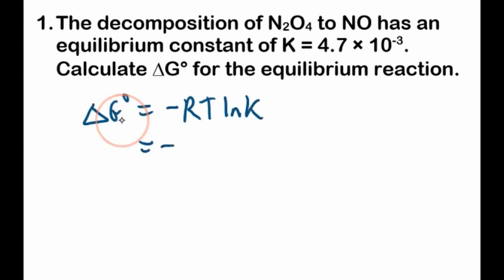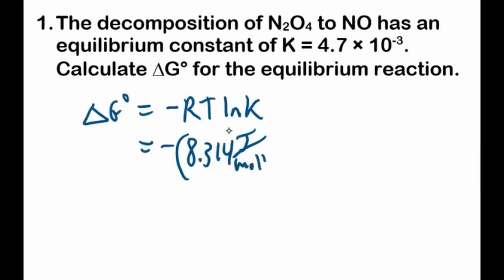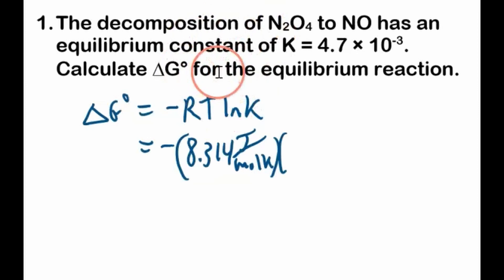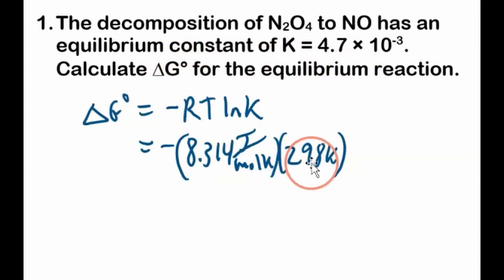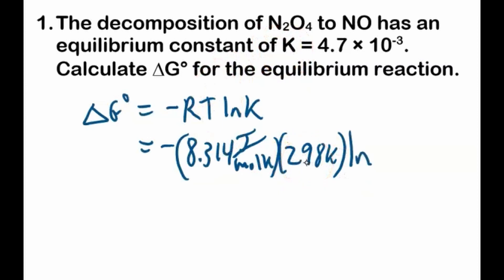At this point we can just plug in. Make sure you use the right R — the value that has joules in it: joules per mole Kelvin. Also very important: we need a temperature. It doesn't give us a temperature here, so we have to assume it's at 25°C, which is 298 Kelvin. Standard state doesn't mean 298 Kelvin — it really could be any temperature — but if it's not given to us, it's implied that it's 298 Kelvin.